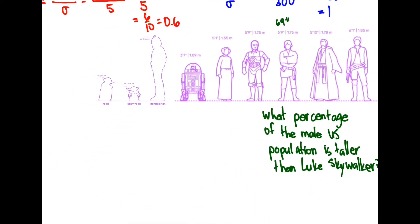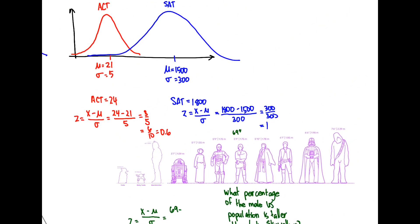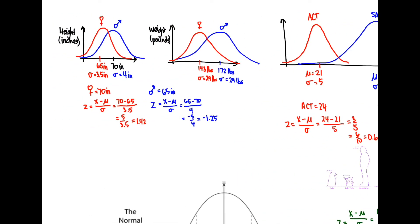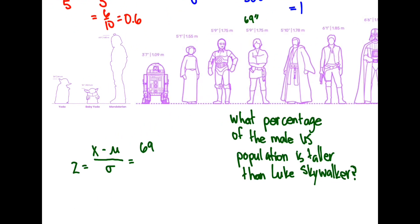So let's see if we can calculate a z-score here. So z equals, again, x minus mu over sigma. And we know that our x is going to be 69. And from that other graph we had here, we had height here is 70 with a standard deviation of 4. So let's come back here and put those numbers in. So minus 70 divided by 4 equals negative 1 divided by 4 or equals negative 0.25.